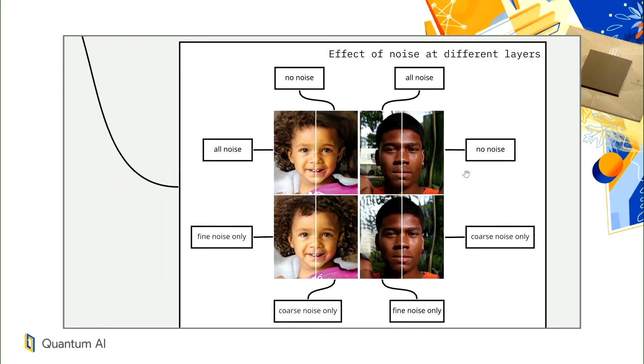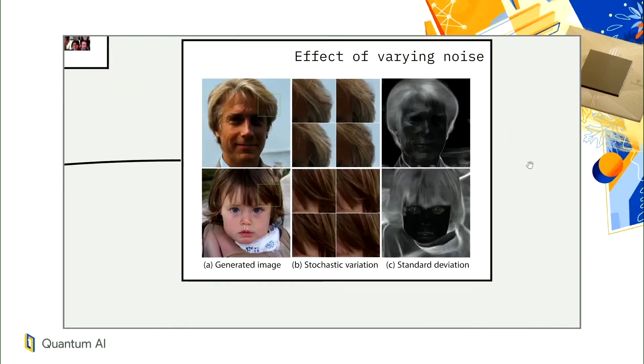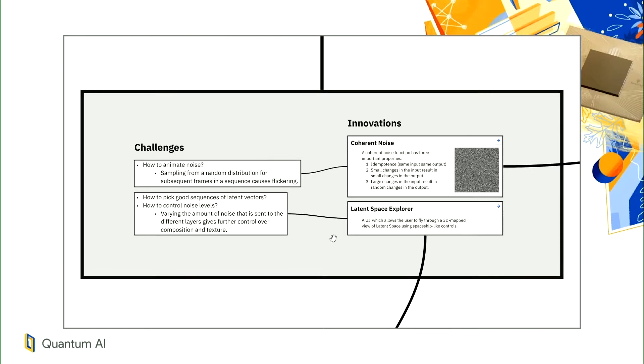StyleGAN adds to this by taking in noise textures at various resolutions. Varying these noise textures leaves the overall style of the image untouched. Instead, these noise textures change the distribution of features in the resulting image that can be assumed to be random. For example, the position of individual hair strands in the picture of a person or the position of bricks in a wall, waves on a lake or something like that. We use GANs to generate interpolations between styles, so interpolating between latent vectors. For this, we want to decide which areas in latent space are used and in which order we want these interpolations to happen.